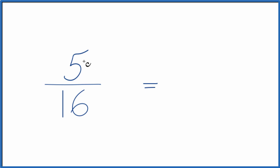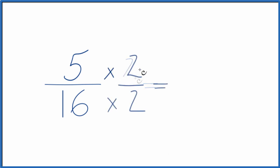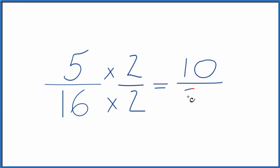We could multiply 5 sixteenths by 1, which would just give us 5 sixteenths. But what if we multiplied it by 2 over 2? Because 2 divided by 2 is 1, we don't change the value, just the way it's represented. 5 times 2 is 10, and 16 times 2 is 32. So 10 thirty-seconds is an equivalent fraction to 5 sixteenths. If you divide 5 by 16 or 10 by 32, you'll get the same decimal answer because they're equivalent.